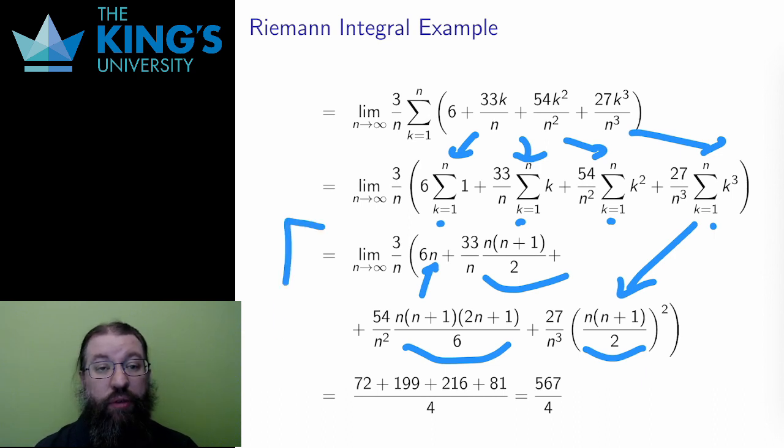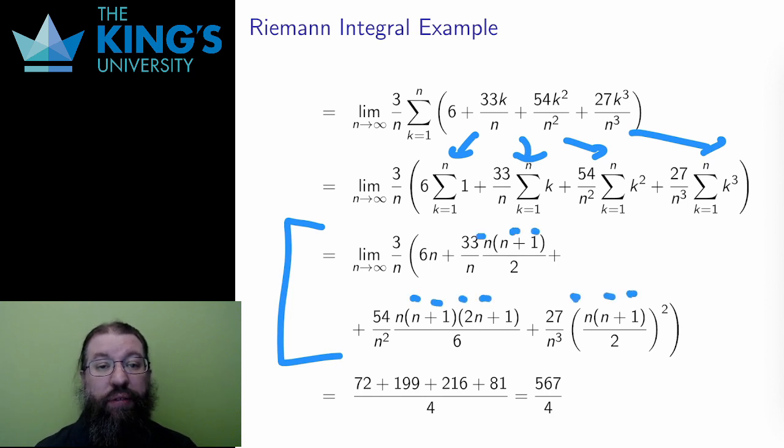Now I have a limit of a function. There's a lot of simplification work to be done here, and I've not shown all that here for the sake of time. I need to multiply all these out and group terms together. Each piece of the limit will have the same asymptotic order in the numerator and in the denominator when I multiply it all out. If I do all that and go to common denominator, again not showing all the arithmetic here, I get this expression, which then boils down to 567 over 4. This is the area under the curve of x cubed minus x between 2 and 5.